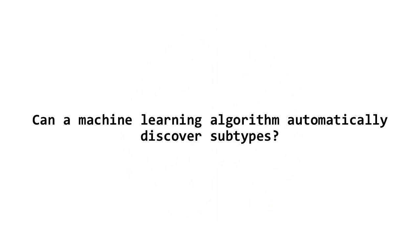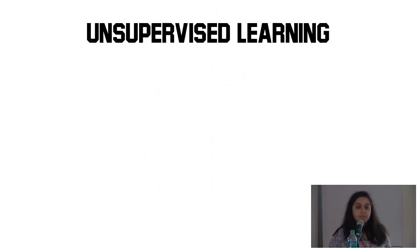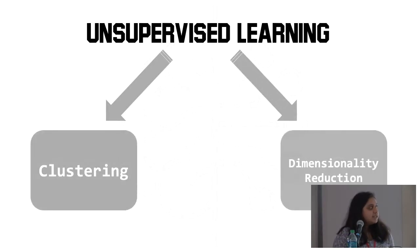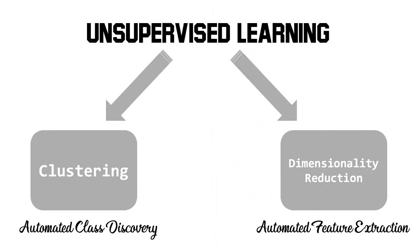Can a machine learning algorithm automatically discover subtypes? And so in enters unsupervised learning. Unsupervised learning is often used when you don't have a lot of data or labeled data. There's two main types, clustering and dimensionality reduction. Clustering is automated class discovery, and dimensionality reduction is automated feature extraction, both of which are things that we're trying to do when you're trying to find new cancer subtypes.